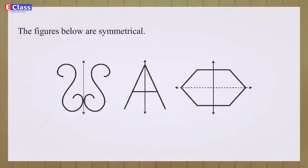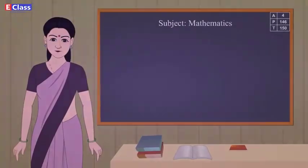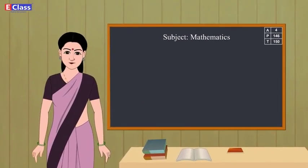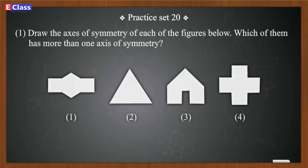The figures below are symmetrical. Now friends, let's solve the Practice Set 21. Draw the axis of symmetry of each of the figures below. Which of them has more than one axis of symmetry? Figures 1, 2, 3, 4.